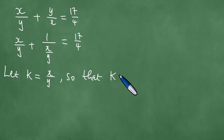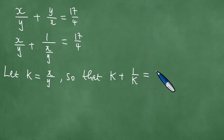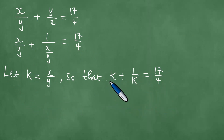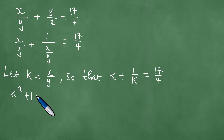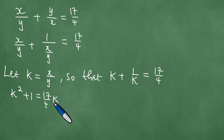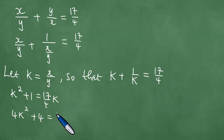We therefore have k plus 1 out of k equals 17 quarters. Upon multiplication through by k, we achieve k squared plus 1 equals 17 out of 4 times k.